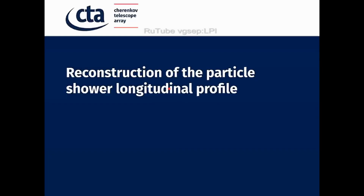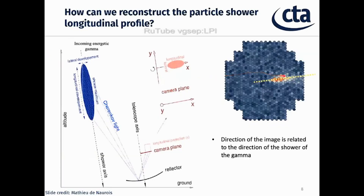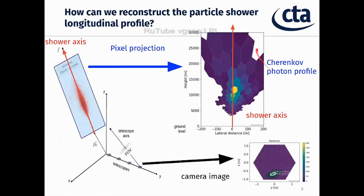The reconstruction of the longitudinal profile is based on how the Cherenkov light is mapped onto the camera. Here you can see that the development of the image is given by the lateral and longitudinal development of the Cherenkov light in the air shower. This means that different pixels in the camera represent different altitudes in the air shower. The direction of the image is related to the extent of the air shower axis.